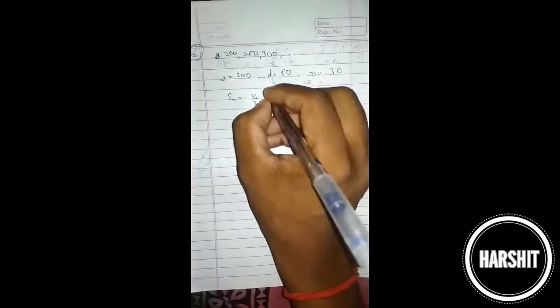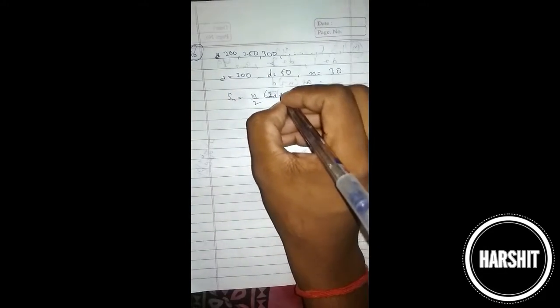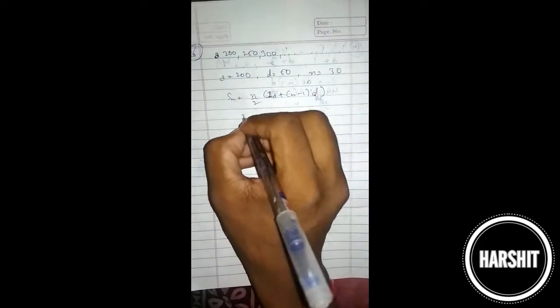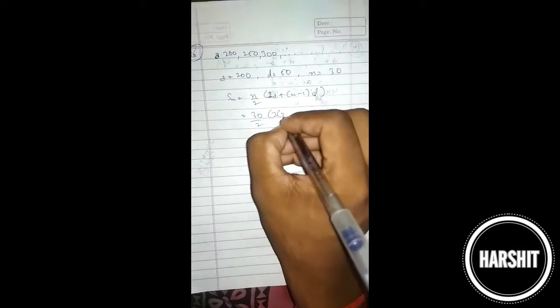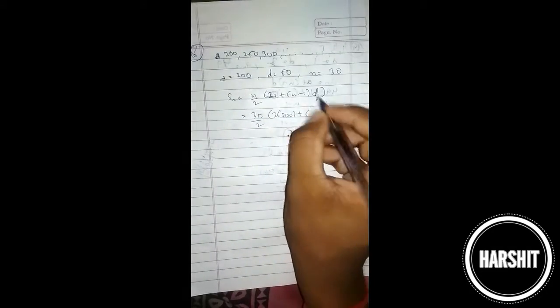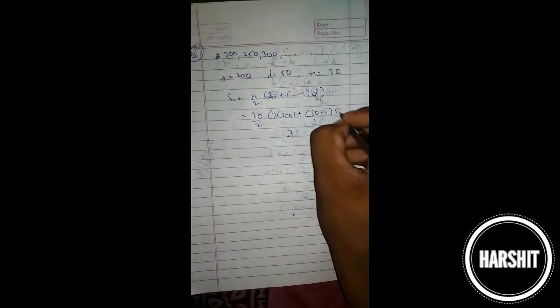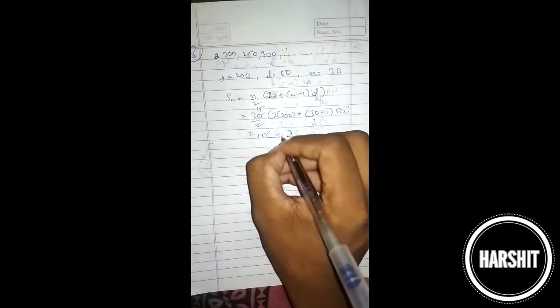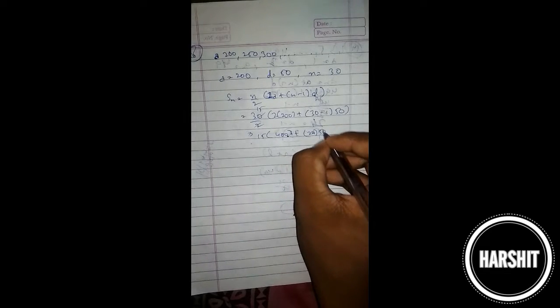I'm going to use the formula: S_n equals n by 2 times 2a plus n minus 1 times d. So n is 30 by 2, 2a is 200, plus n is 30 minus 1, d is 50. So 15 times 400 plus 29 times 50.